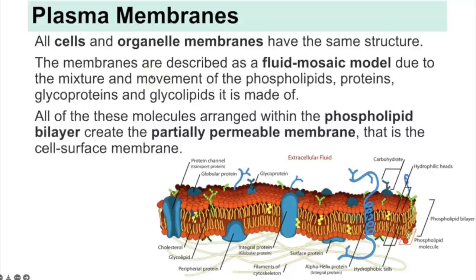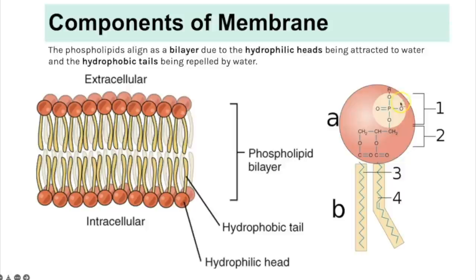All cells and organelle membranes share the same structure — the fluid mosaic model. It is named because the membrane has slight movement and is composed of a range of molecules including phospholipids, proteins, glycoproteins and glycolipids. These are arranged within the phospholipid bilayer creating a partially permeable membrane. The phospholipid has a hydrophilic head (attracted to water due to the negative charge on the phosphate group) and hydrophobic tails (repelled by water but able to interact with lipids), so tails face inward and heads face outward.